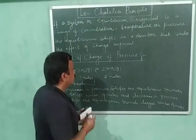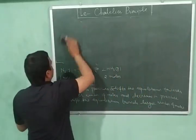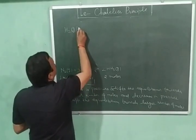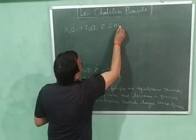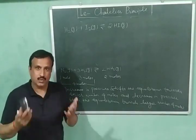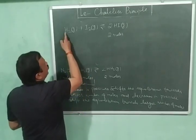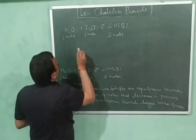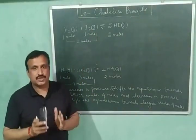Let us explain with an example. In this reaction, one mole of hydrogen is reacting with one mole of iodine, giving us two moles of hydroiodic acid. You can see that the number of moles of reactants and products are equal — in reactants we have two moles (one plus one), and in products we also have two moles. So in such type of reactions, pressure is not going to have any effect.